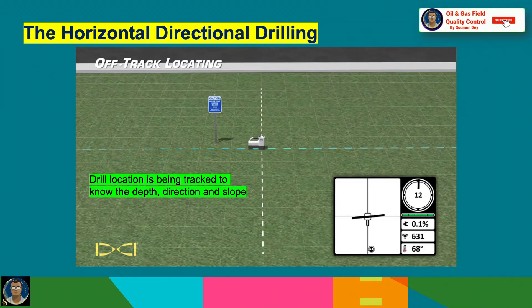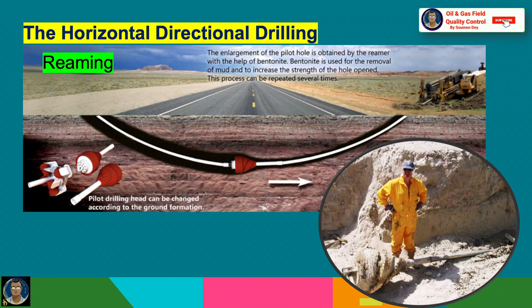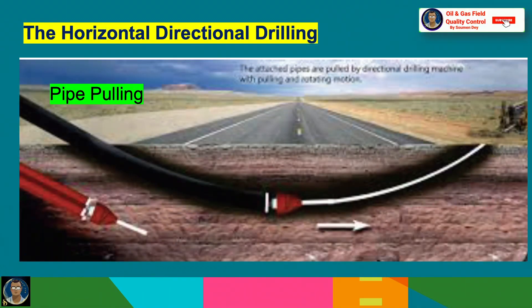Drill location continues to be tracked for depth, direction, and slope. You can see the monitor screen of the tracker unit. Here is the horizontal directional drilling rig — this is the punch-out, which has come out from the hole. Here is the reaming hole: first the pilot hole is dug, then the reaming hole. The enlargement of the pilot hole is achieved by the reamer with the help of bentonite, which is used for mud removal and to increase the strength of the opened hole. The process can be repeated several times. You can see the picture of a reamer that has come out from the hole. The pilot drilling head can be changed according to the ground formation. This is the pipe-pulling activity — the third stage — where attached pipes are pulled by the directional drilling machine with a pulling and rotating motion.